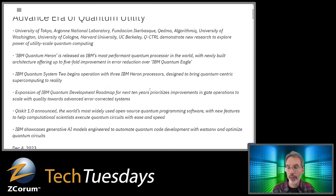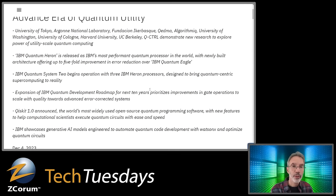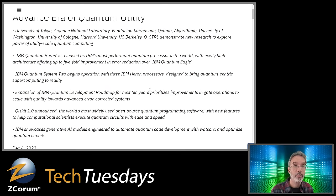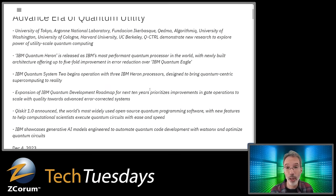Talking about the power: with a classical computer, if you go from one transistor to 20, you've got 20 times the power. But with a quantum computer, if you go from one qubit to 20 qubits, that increases computing capacity by roughly a million times. It's really exponential — as you add qubits, you're getting enormously more power.